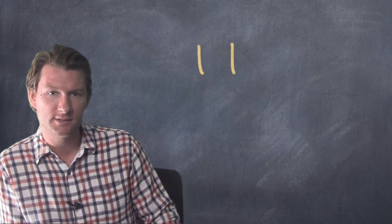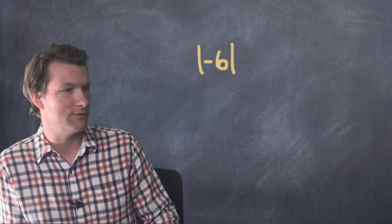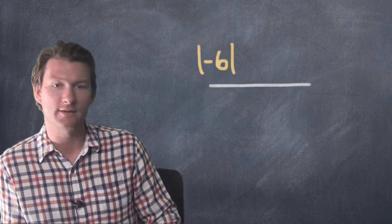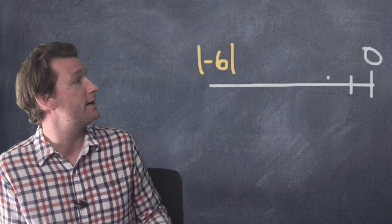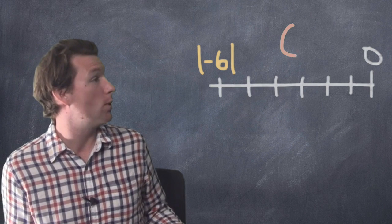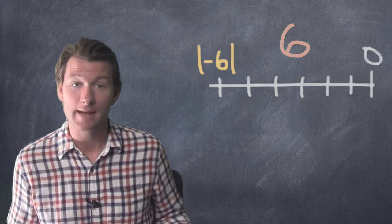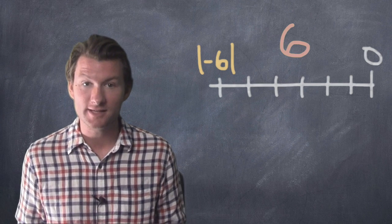Now, what about negative six? Well, again, ask yourself, how far away from zero is negative six? Let's look at a number line again. We'll see negative six, well, that's six away from zero also, so the absolute value of negative six is six.